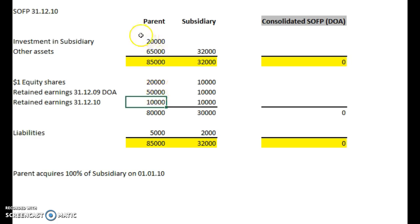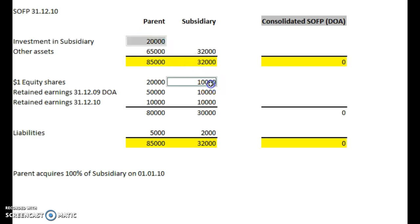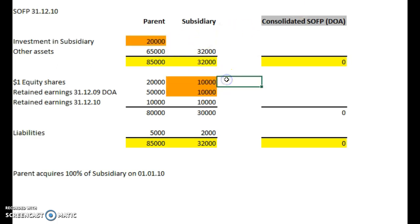The investment in the subsidiary by the parent — 20,000 — is equal to the equity shares and the retained earnings at the date of acquisition. So those three figures should all add up. And since then, we've earned another 10,000.